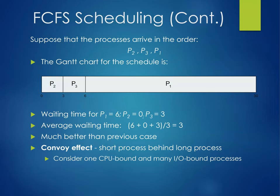Suppose the processes arrive in a different order: P2, P3, and P1. Now P2 runs first for 3 seconds, P3 runs for 3 seconds, and then P1 runs the rest of the time. The waiting time for P1 is now 6, P2 is 0, and P3 is 3. The average waiting time is (6 + 0 + 3) / 3 = 3, much better than the previous case.